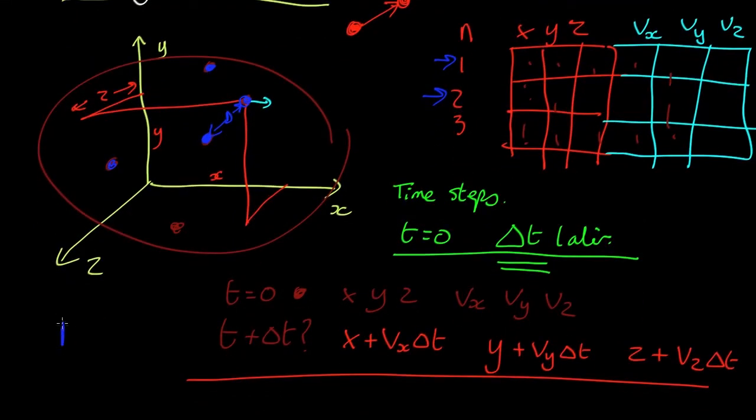Once we know the distance, we can now calculate the force, which is just going to be given by Newton's law of gravity, G m1 m2 over the distance squared. So what we can do is, for each particle, we can then go about every other particle and work out the gravitational force.